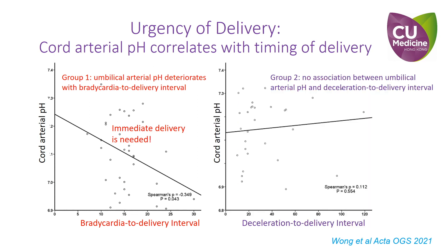On the other hand, in the group with recurrent decelerations or normal CTG, umbilical cord arterial pH remains normal. Hence, for these two groups, the need for crash delivery is low, and a decision-to-delivery interval within 30 minutes is acceptable. Meanwhile, preventing further cord compression, close fetal monitoring, and optimization of maternal conditions before cesarean delivery are the suitable management approaches.